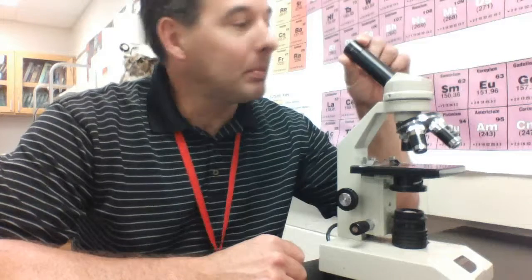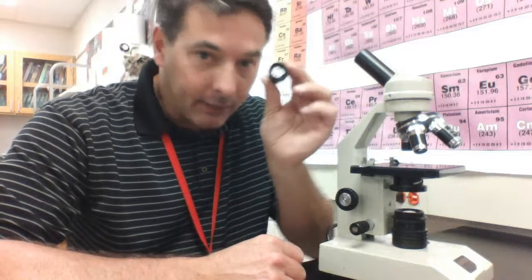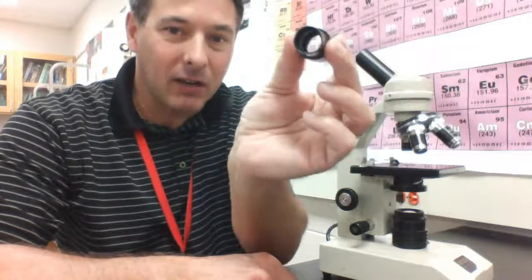Quick rundown of the parts that we'll need to know. This is the eyepiece. It contains a lens that has a 10x magnification. It allows us to see things 10 times greater than their actual size.